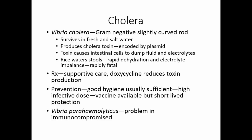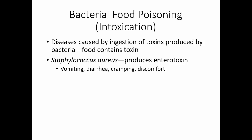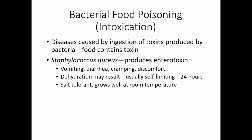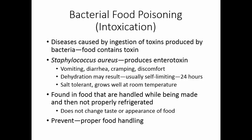Bacterial food poisoning is an intoxication — diseases caused by ingesting toxins produced by bacteria growing in food. Staphylococcus aureus can produce an enterotoxin causing vomiting, diarrhea, cramping, and intestinal discomfort. Vomiting and diarrhea may be relatively severe and dehydration may result. The disease usually resolves within 24 hours and is self-limiting. Staphylococcus aureus is salt tolerant and grows well at room temperature. Because it may be normal skin flora, it is typically found in foods that are handled extensively during preparation and then not properly refrigerated. The toxin does not change the taste or appearance of the food, so prevention requires proper food handling.